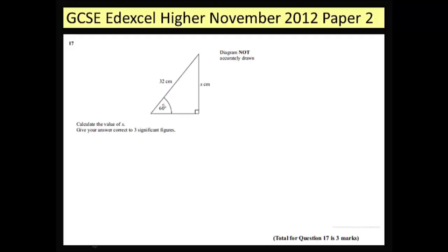So a little trick, always label only the sides you're interested in. So here this is clearly an opposite and this is a hypotenuse.